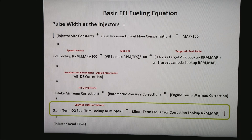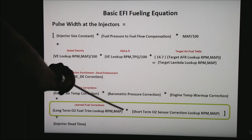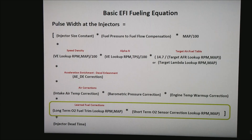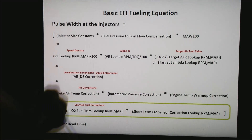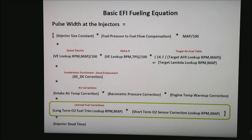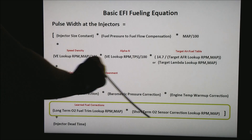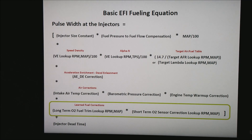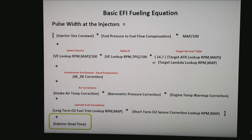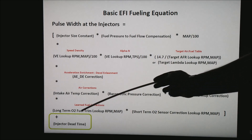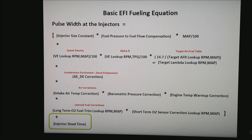Next are the learned fuel corrections — basically your long-term fuel trim and your short-term fuel trim. The short-term is the immediate correction based on what the O2 sensor is telling the ECU, and the long-term is an accumulation of the short-terms. Injector dead time is the only piece of this equation that falls outside these brackets — it is added on at the very end of all fuel calculations.